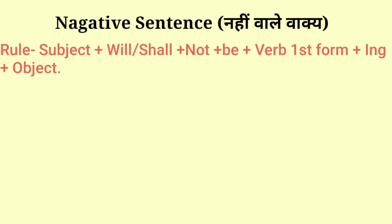Next is the negative sentence of future continuous tense. For making this sentence we use: Subject + will / shall + not + be + verb first form + ing + object. Ab aate hain hamare negative sentence, arthat nahi wale vaakya, jinko banane ke liye hum Subject + will / shall + not + be + verb first form + ing + object ka prayog karte hain.